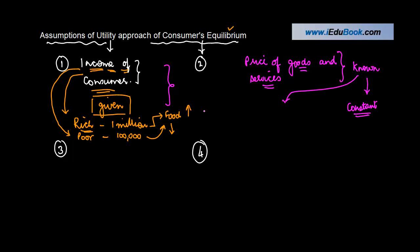The first reason is they should be known. Why? If the prices are not known, how will this person allocate the money to various goods or services? So in order to take that decision, what money needs to be allocated, the price of the goods and services that this person is interested in should be known. And the second thing is they should remain constant.